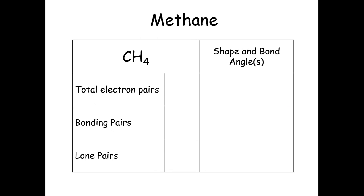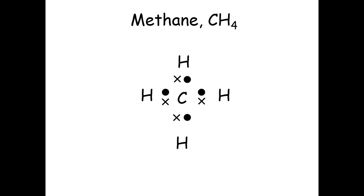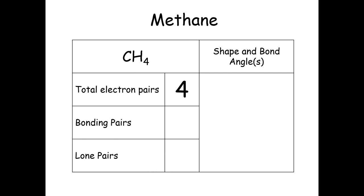Now we're going to look at methane, CH₄. Have a go at drawing the dot-cross diagram and fill in how many electron pairs there are, how many pairs are involved in bonding, and how many lone pairs are present. Carbon has four outer electrons; each of the four hydrogens shares one electron. Counting them up: four pairs of electrons, all four involved in bonding, no lone pairs present. So the table reads: four electron pairs, four bonding pairs, zero lone pairs.